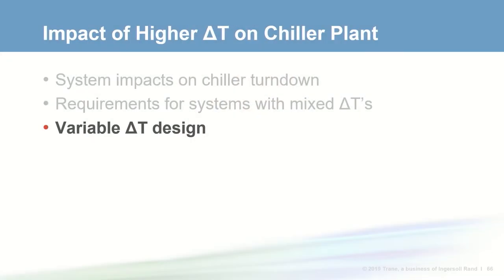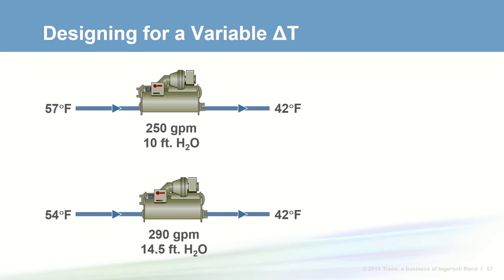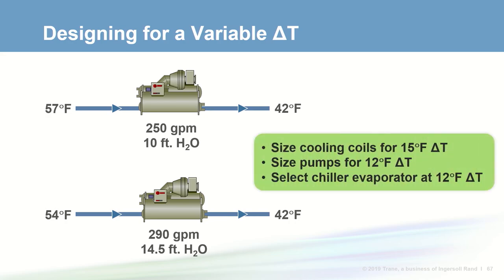The last topic is designing for a variable delta T. If you have a mixture of two-way and three-way valves, want to over-pump a chiller in a VPF system, or plan on doing chilled water reset, any of these can result in less than design delta T during operation. One approach: take a design chiller selected for 250 GPM at 10 feet of pressure drop, and if you ran it at design tonnage with a 12 degree delta T instead of 15, you'd get 290 GPM at 14.5 feet of pressure drop. You'd still size coils for 15 degree delta T, but use the 290 GPM and increased evaporator pressure drop to ensure you have enough pump to handle a variable delta T design.